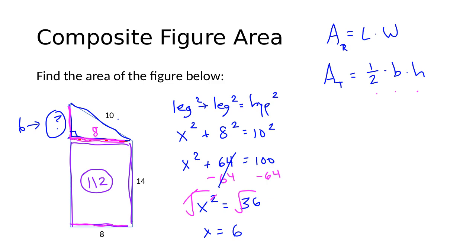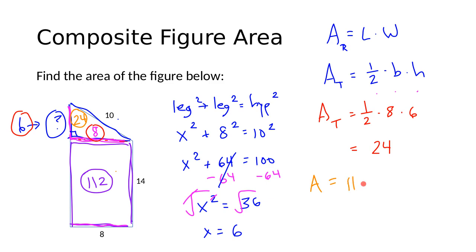Now I can find the area of the triangle: one-half times the base of 8 times the height of 6 — that's one-half times 8 times 6, which equals 24. The area of the rectangle is 112, and the area of the triangle is 24. Adding those together, the total area of the entire figure is 136. The units could be square feet, square yards, square centimeters, or square inches, but the area is definitely 136.